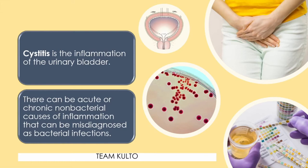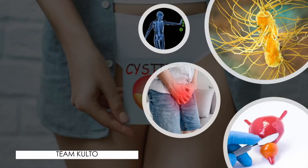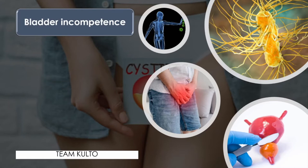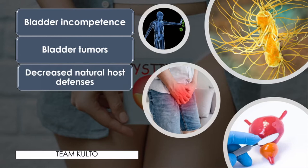Cystitis usually occurs due to the following causes. First, bladder incompetence — the inability to empty the bladder completely could lead to infection, because retained urine creates a good environment for bacterial growth. Second, bladder tumors — urine flow is obstructed by the tumor causing urinary stasis. Third, decreased natural host defenses — immunosuppression and a weak immune system could predispose the patient to infection.